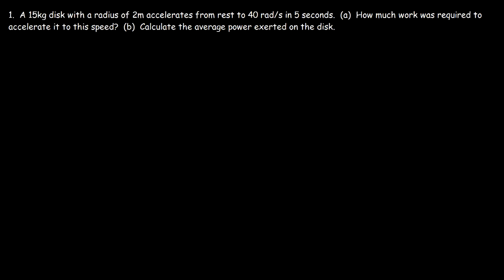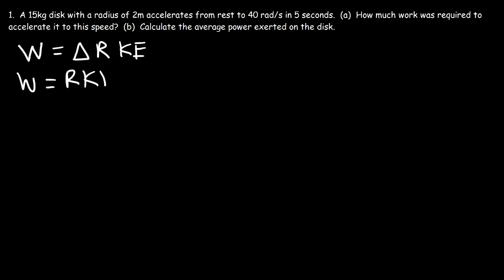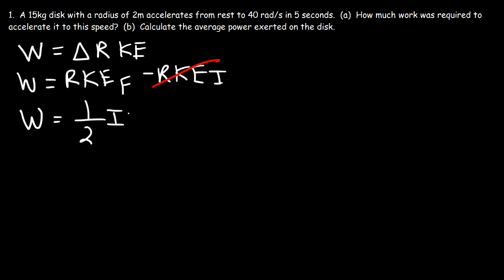Now let's work on this problem. A 15 kilogram disc with a radius of 2 meters accelerates from rest to 40 radians per second in 5 seconds. How much work was required to accelerate it to this speed? One way to calculate the work is using the change in rotational kinetic energy: the final rotational kinetic energy minus the initial. Initially the disc was at rest, so the initial rotational kinetic energy was 0. So the work equals the final rotational kinetic energy, which is 1/2 times inertia times omega squared.